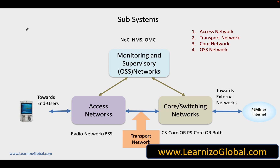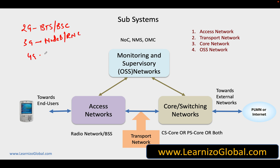To take a few examples: the 2G access network has components like BTS and BSC; the 3G access network has components referred to as Node B and RNC; the 4G access network is referred to as eNodeB; and in 5G we refer to this access network as gNodeB.